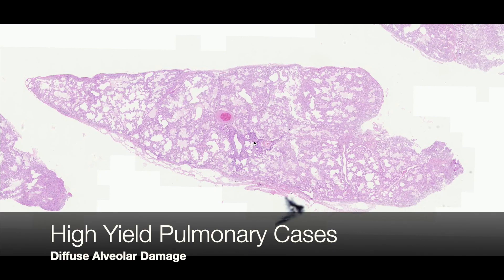My name's Matt Cicchini and our next case of high yield pulmonary cases is a case of acute lung injury. First I want to talk about acute lung injury in general.